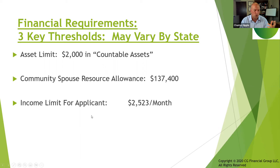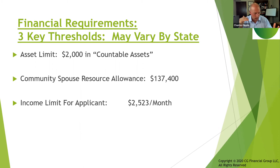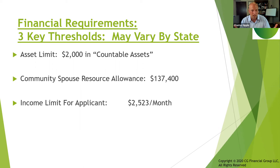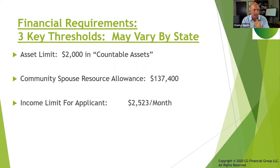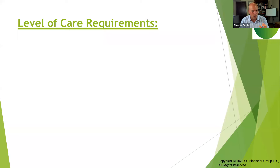There are other thresholds, like the spousal monthly minimum needs allowance. If the community spouse has income below $3,435, some of the institutionalized spouse's income can be diverted to him because he's close to the poverty line. There are a lot of thresholds out there — I want you to know what you need to know and let the attorneys deal with the rest.